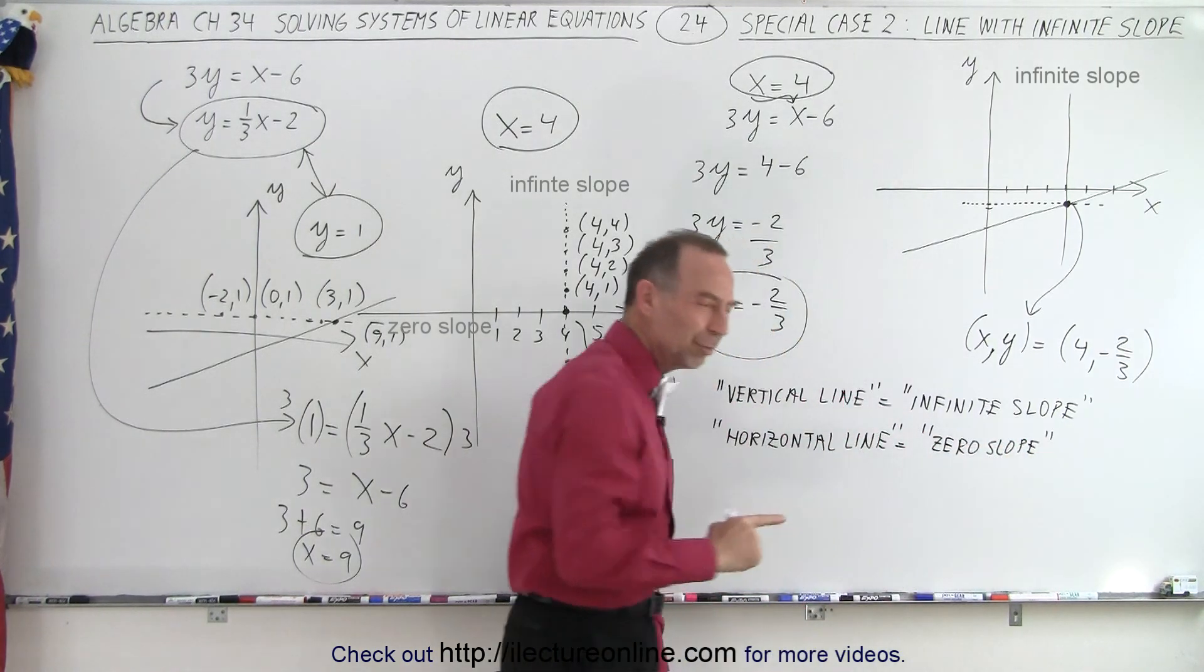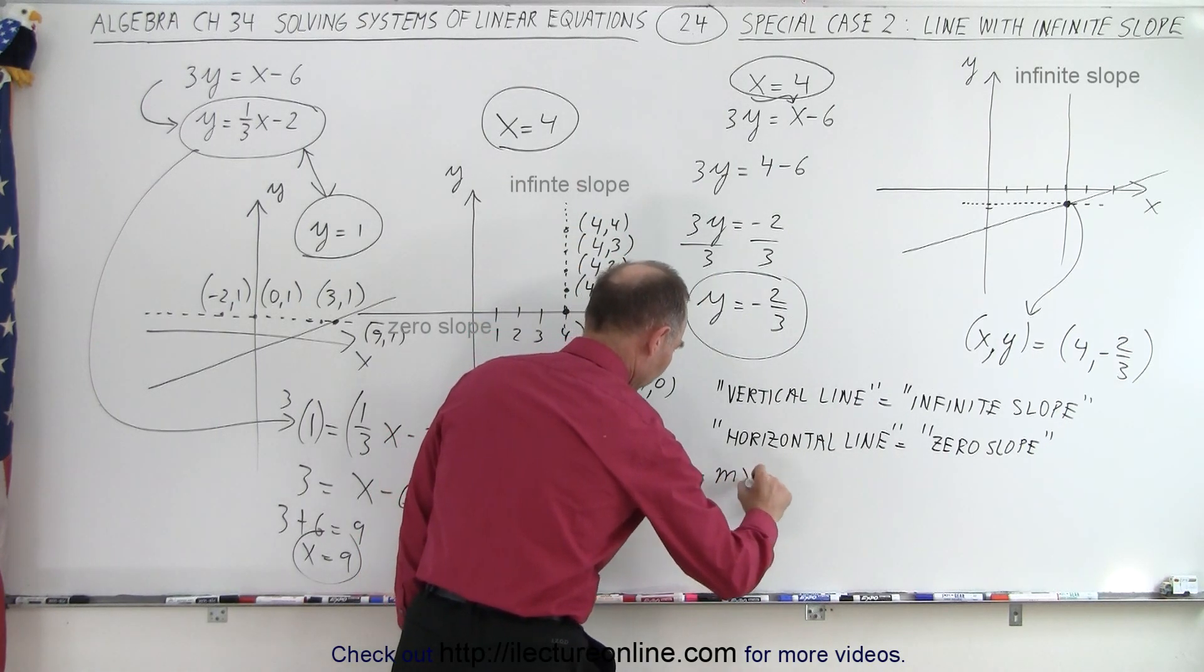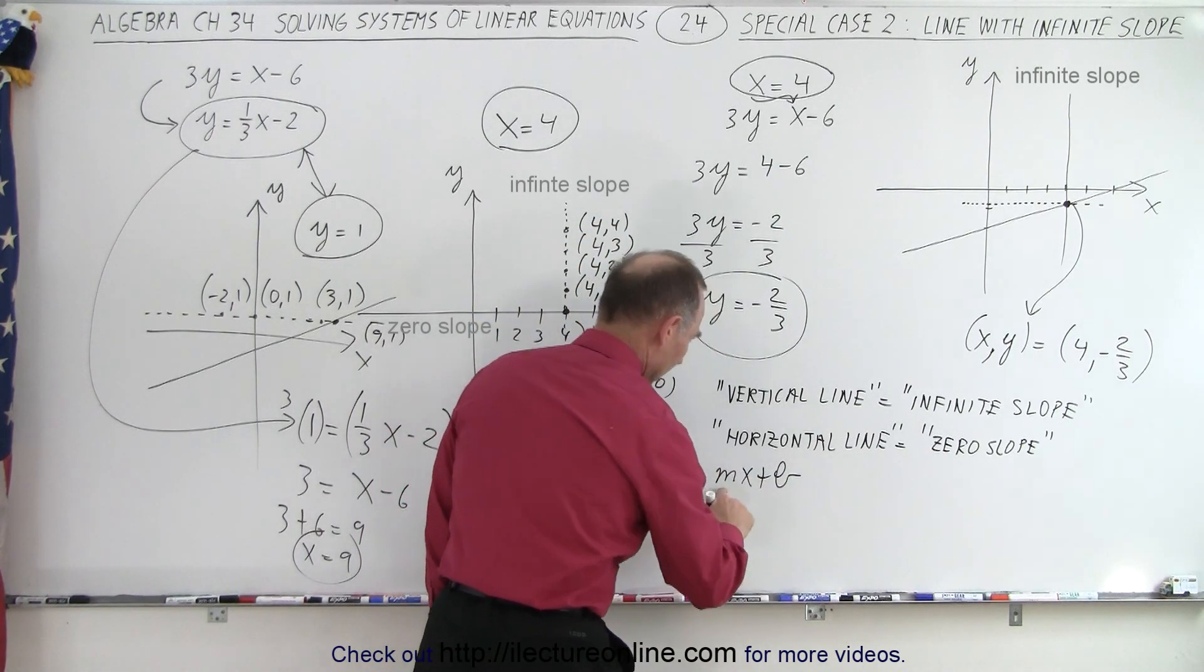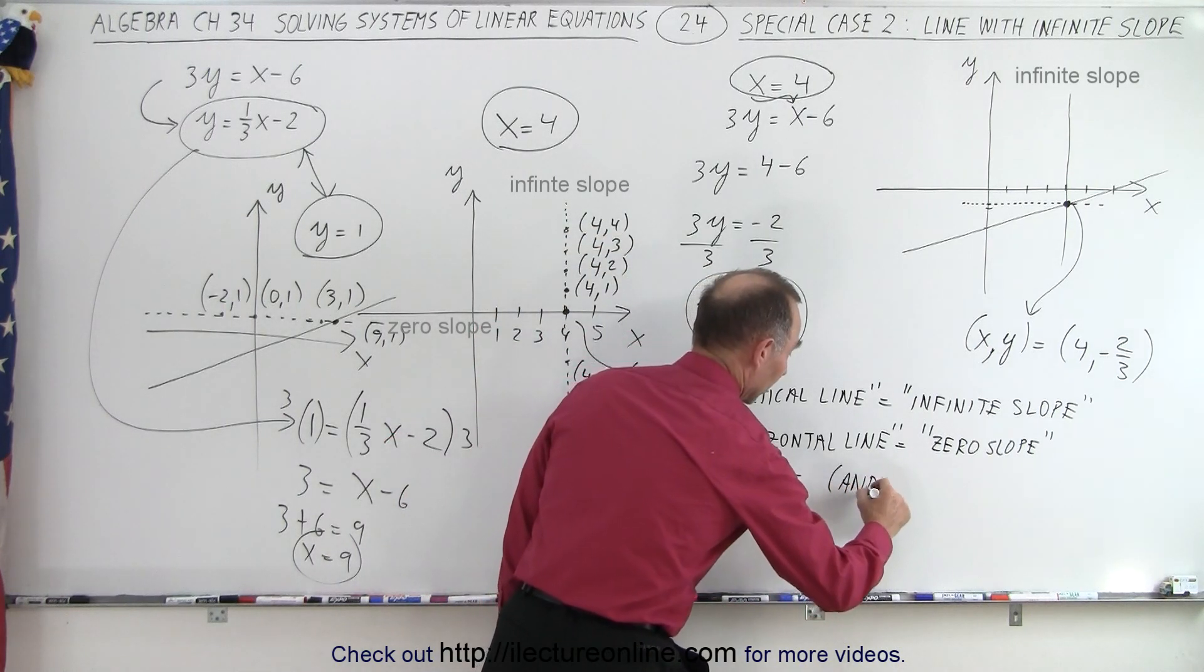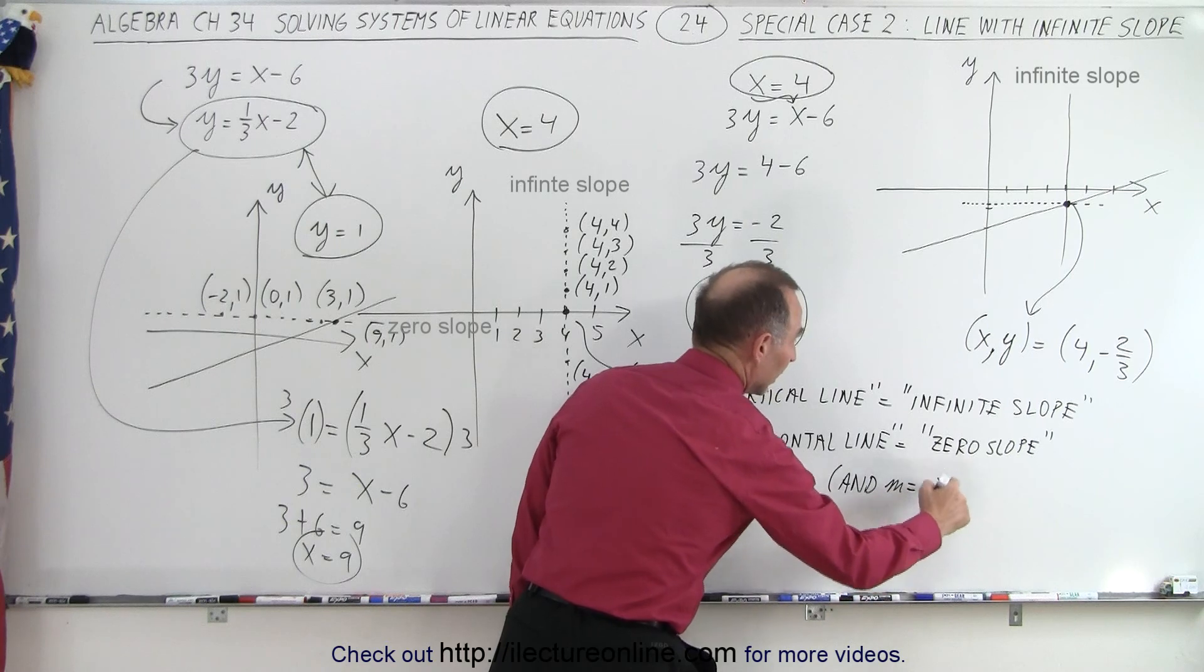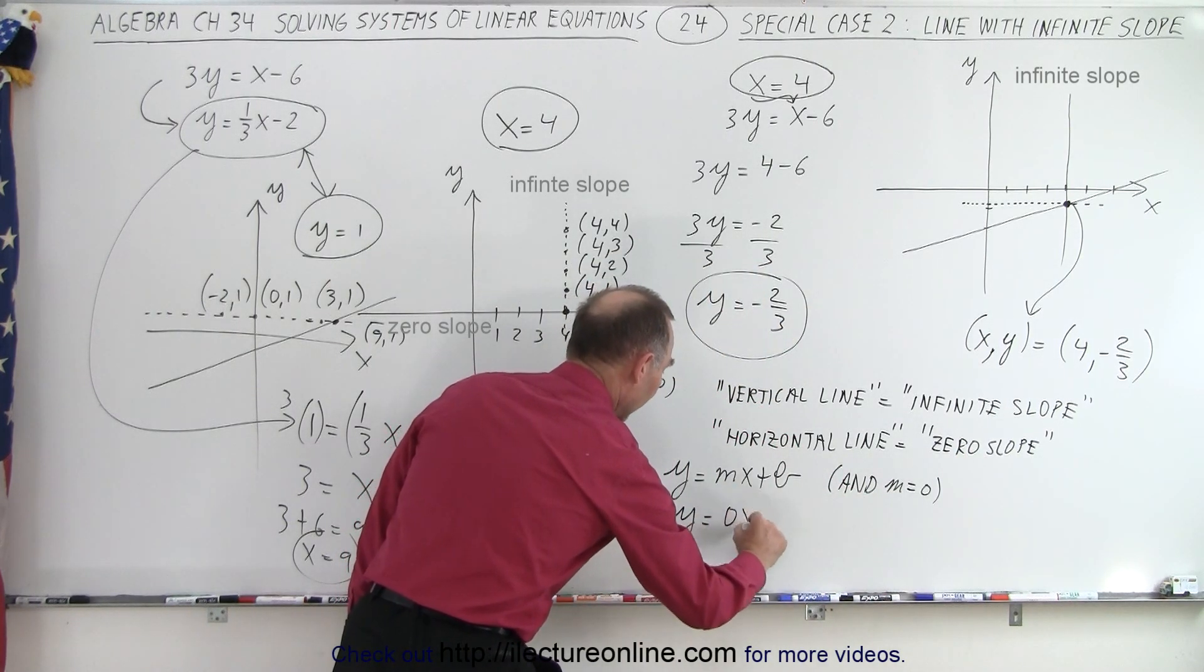And that can actually be easily seen, because if you have the equation y equals mx plus b, and you let m equal zero, and m equals zero indicates zero slope, then you end up with y equals 0x plus b, or simply y equals b.